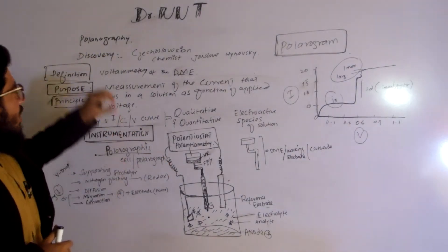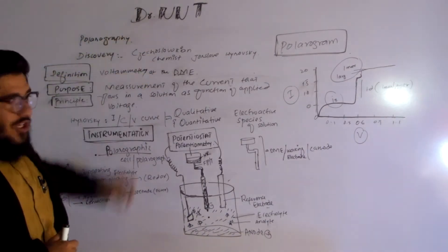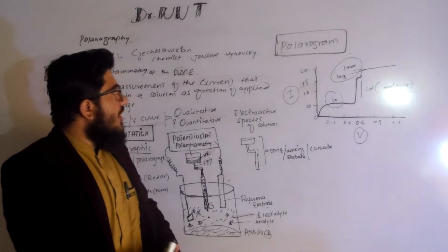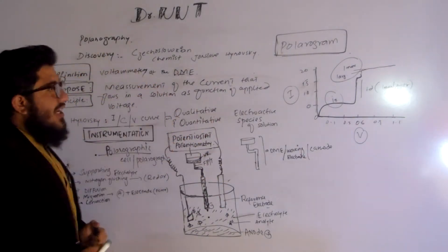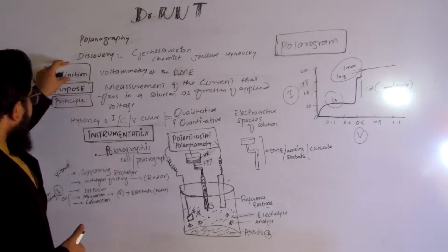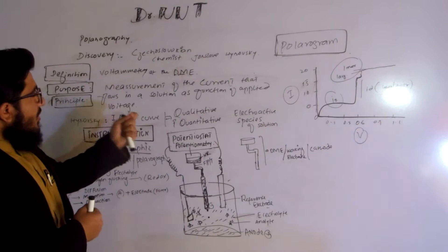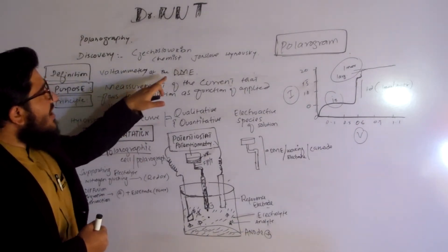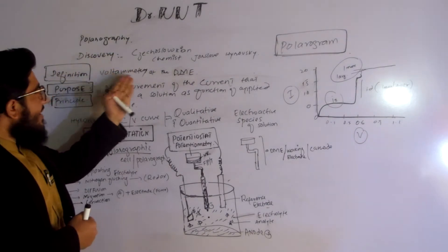First of all, let's note the discovery. A Czechoslovak chemist, Jaroslav Heyrovský, was the person who discovered the technique of polarography. What is the definition of polarography? Polarography is voltammetry at the DME — voltammetry at the dropping mercury electrode is known as polarography.